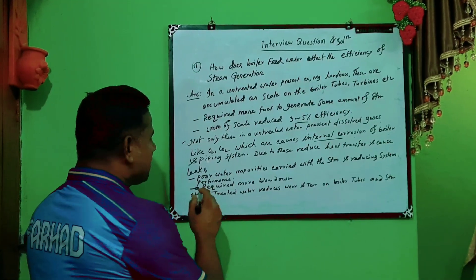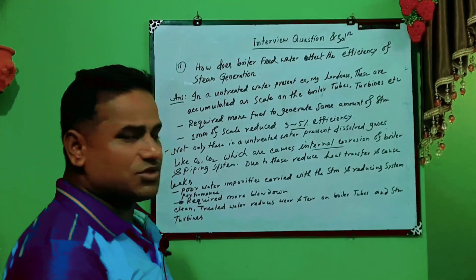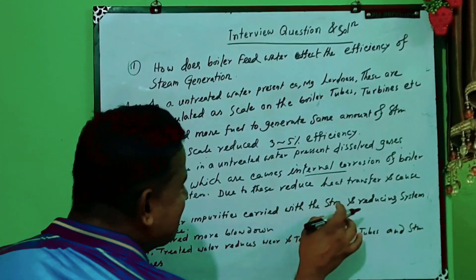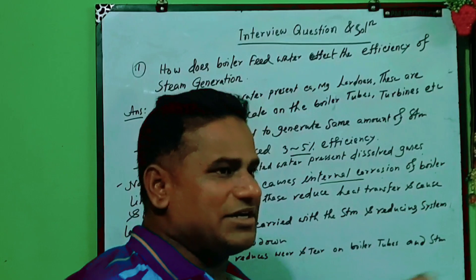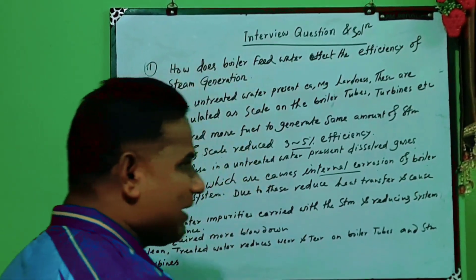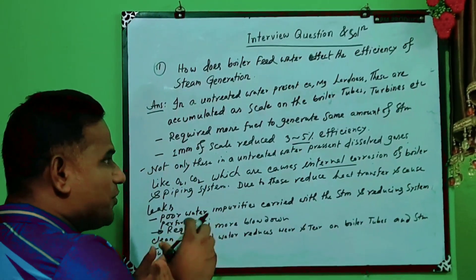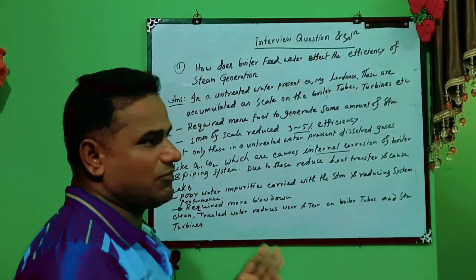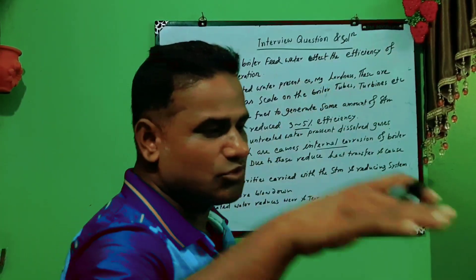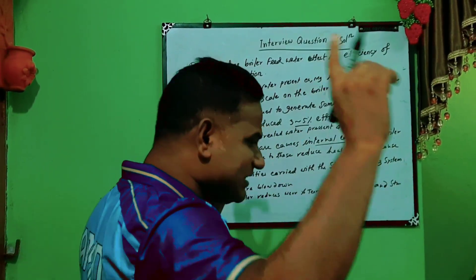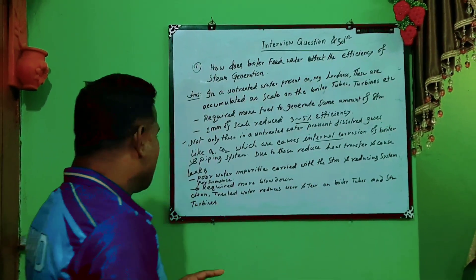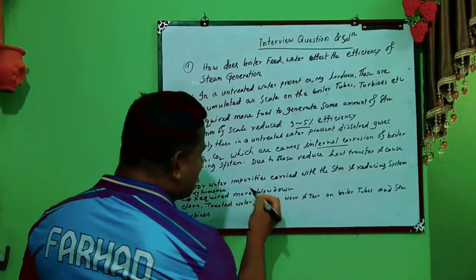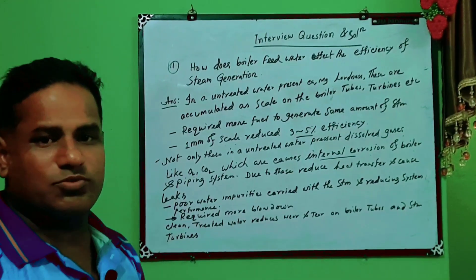Third: impurities in untreated water are carried with the steam. If untreated water is provided, these impurities travel with the steam to the turbine side, reducing overall system performance.